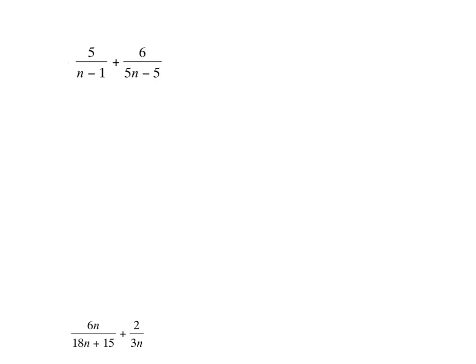If we want to add rational expressions, we are going to check our denominators and see if they're the same. If they're not the same, then we can't add them yet. I see that they are not the same, and when comparing them, I always want it to be in as factored form as possible.